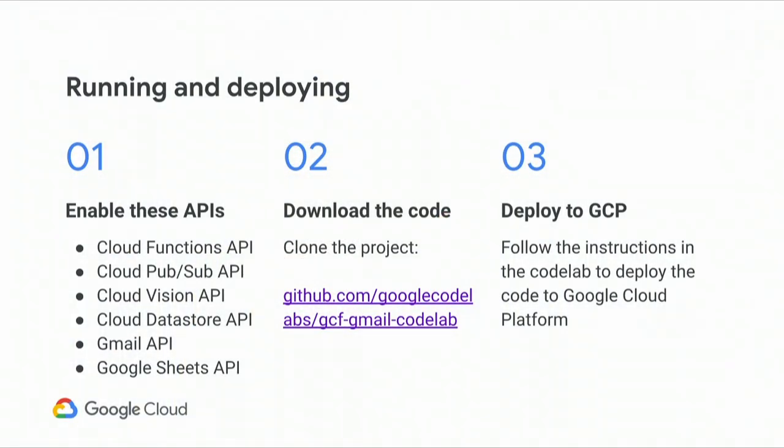Now we'll hand it back to Ace to talk about running and deploying this demo. You'd think, given how many different possibilities are exposed by this combination of Cloud and G Suite, that deploying this would be a lot of effort — but surprisingly, it's not. You can break it down into three simple steps: enable the various APIs listed, clone the GitHub project at github.com/googlecodelabs/gcf-gmail-codelab, and follow the instructions in the codelab to deploy the code to GCP. Unfortunately, we're having a couple of technical issues with the codelab, but those should be resolved soon.